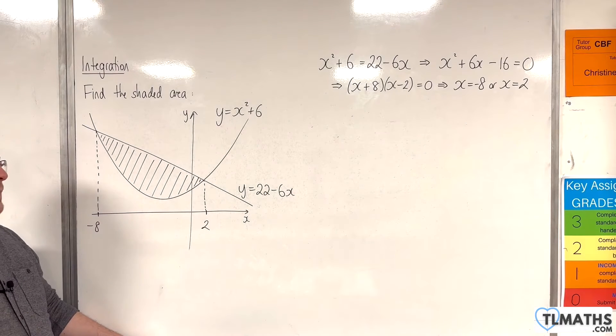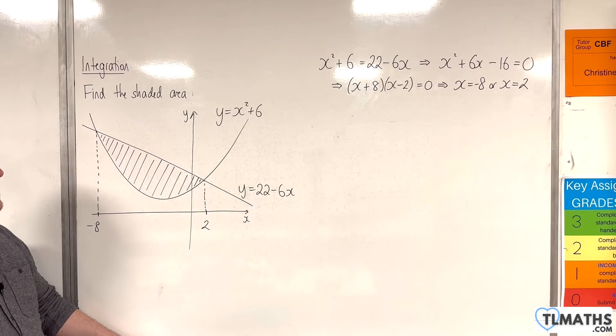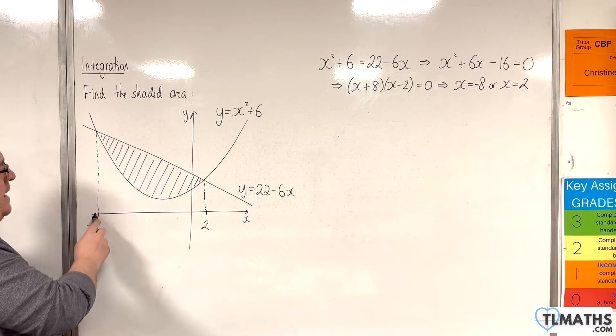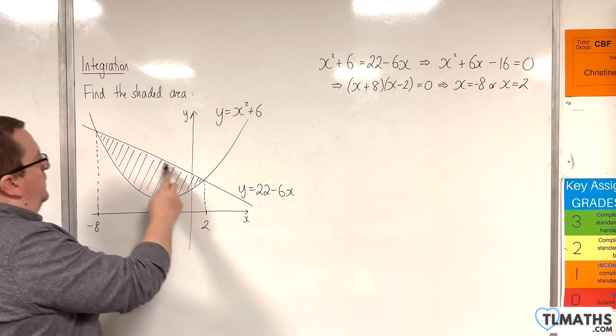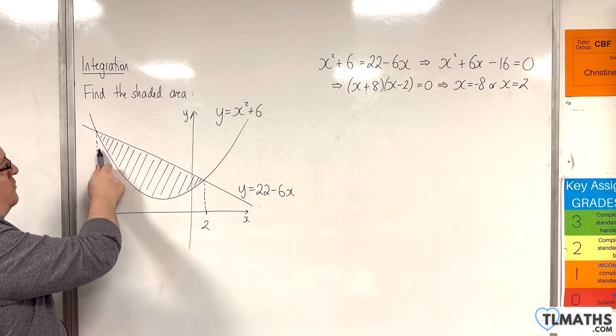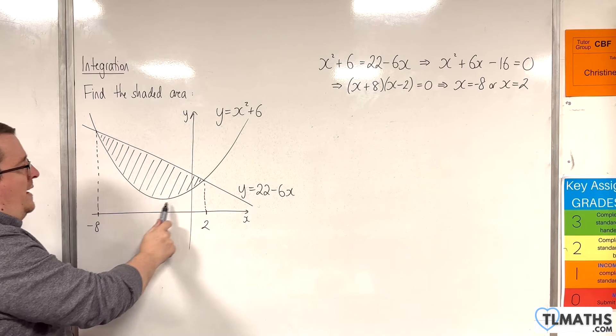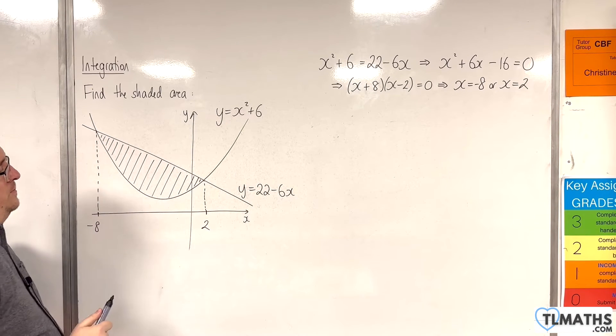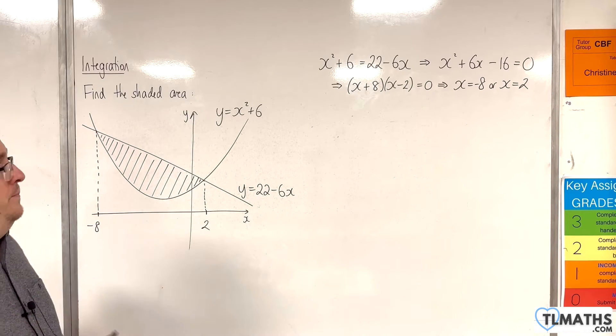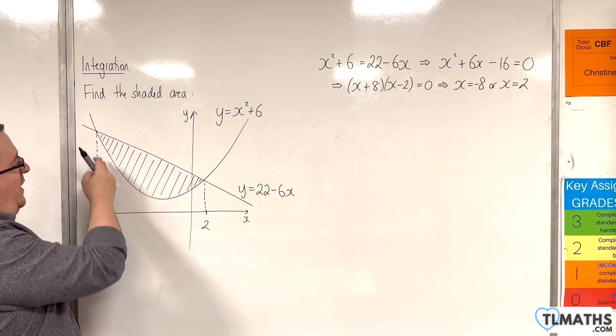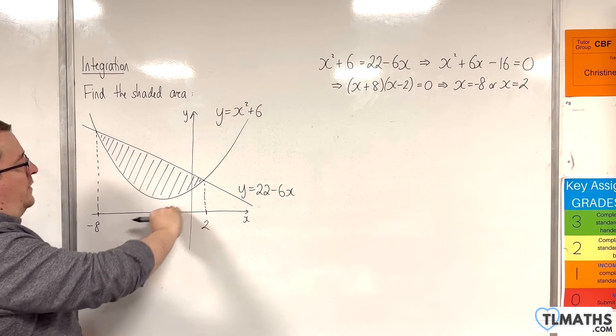Okay, so we've got that bit sorted. Now, in order to work out the shaded area, what I could do is I could work out the area of this trapezium. And then, I could take away the area underneath the curve by integrating the y equals x squared plus 6 between minus 8 and 2. So, that's what we'll do. We'll find the area of the trapezium and then take away the area underneath the curve.